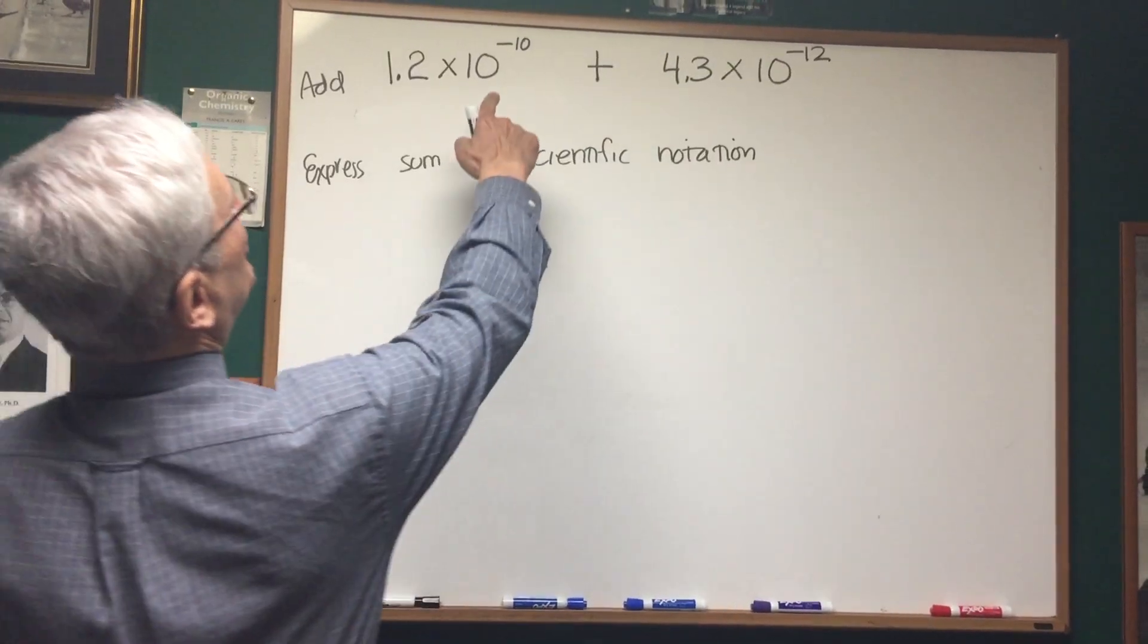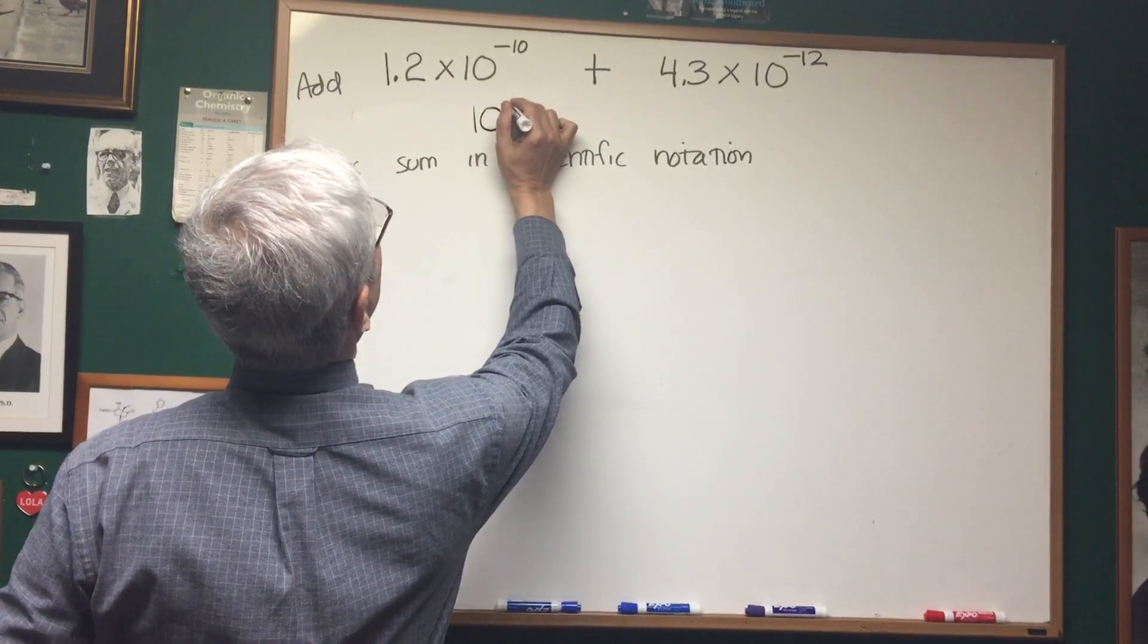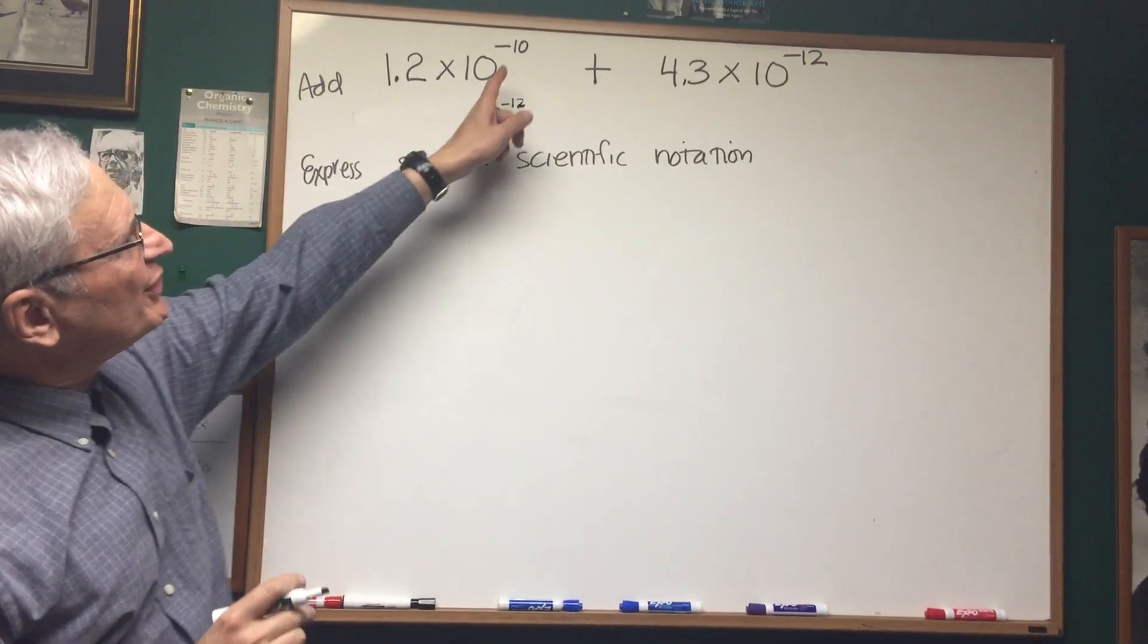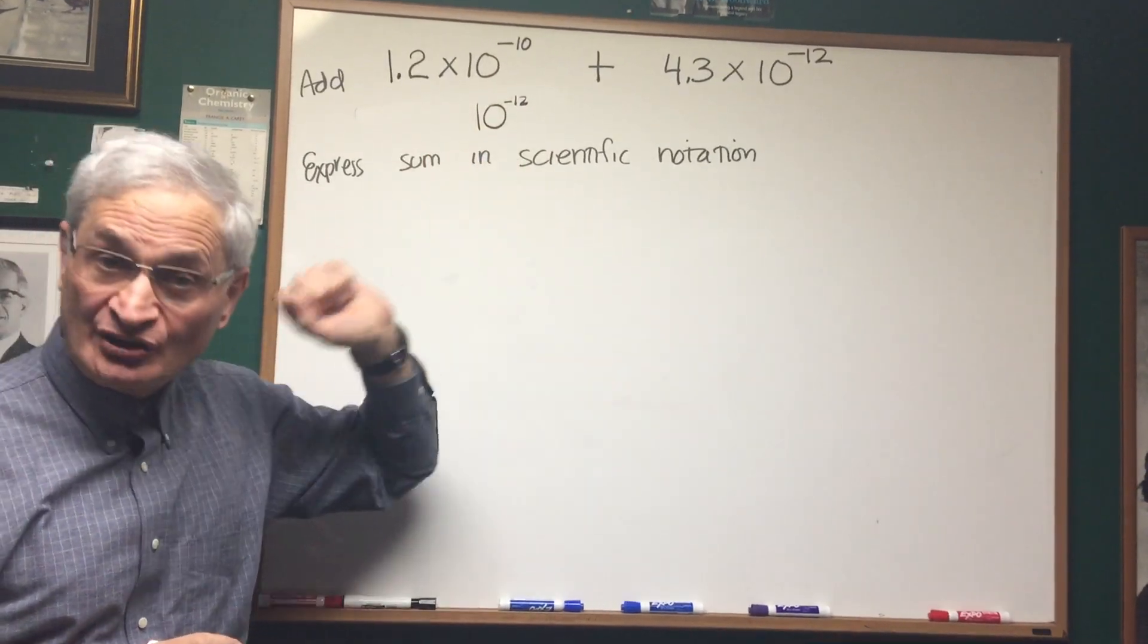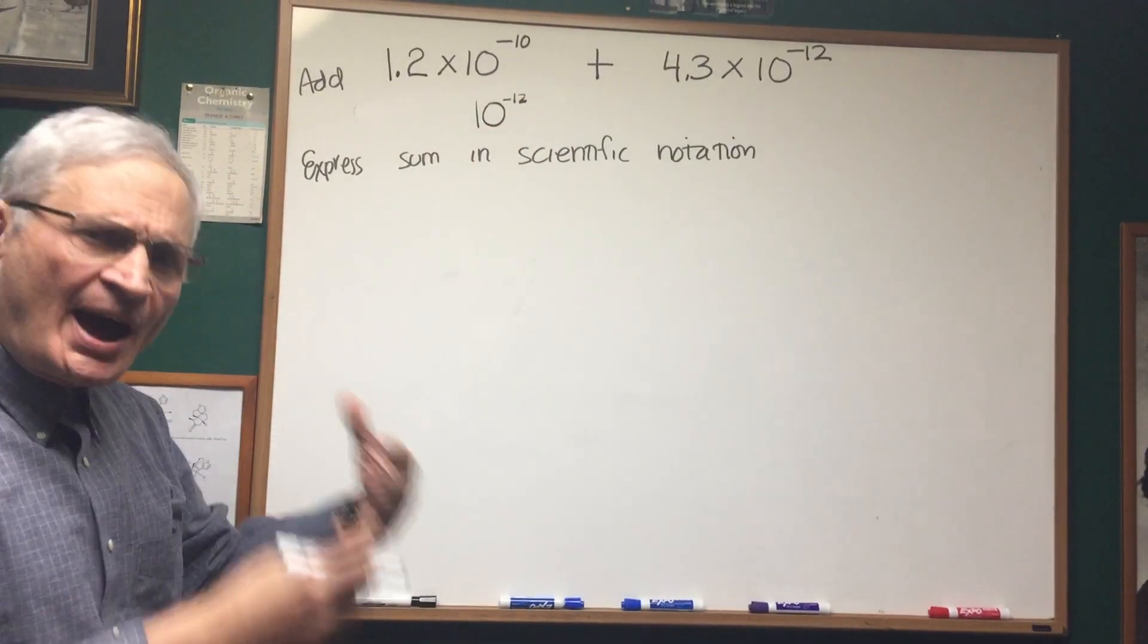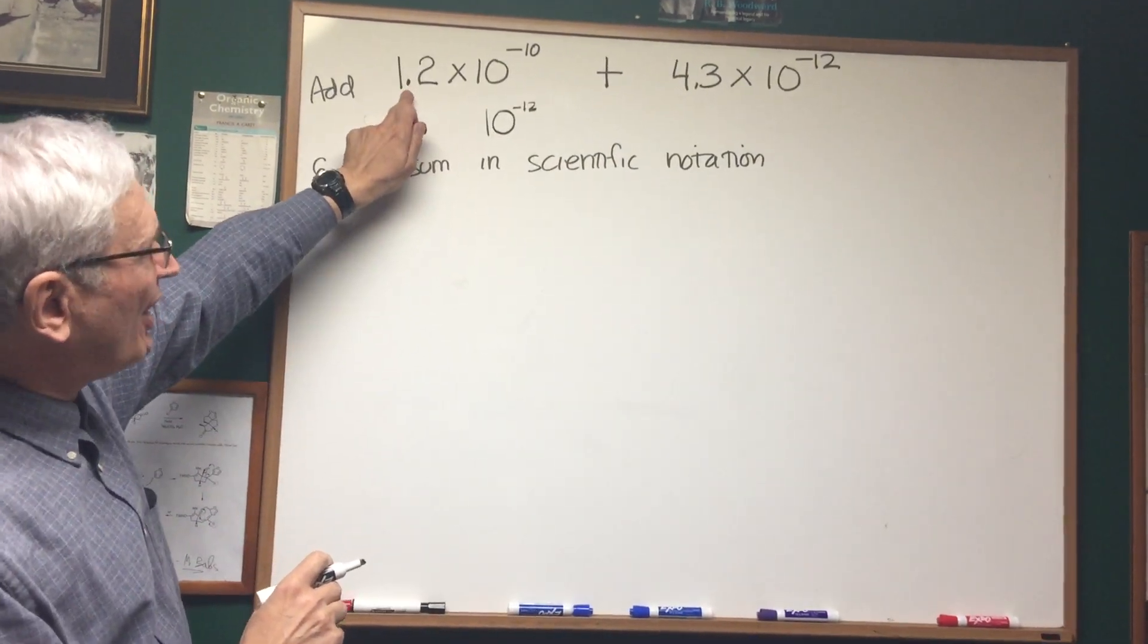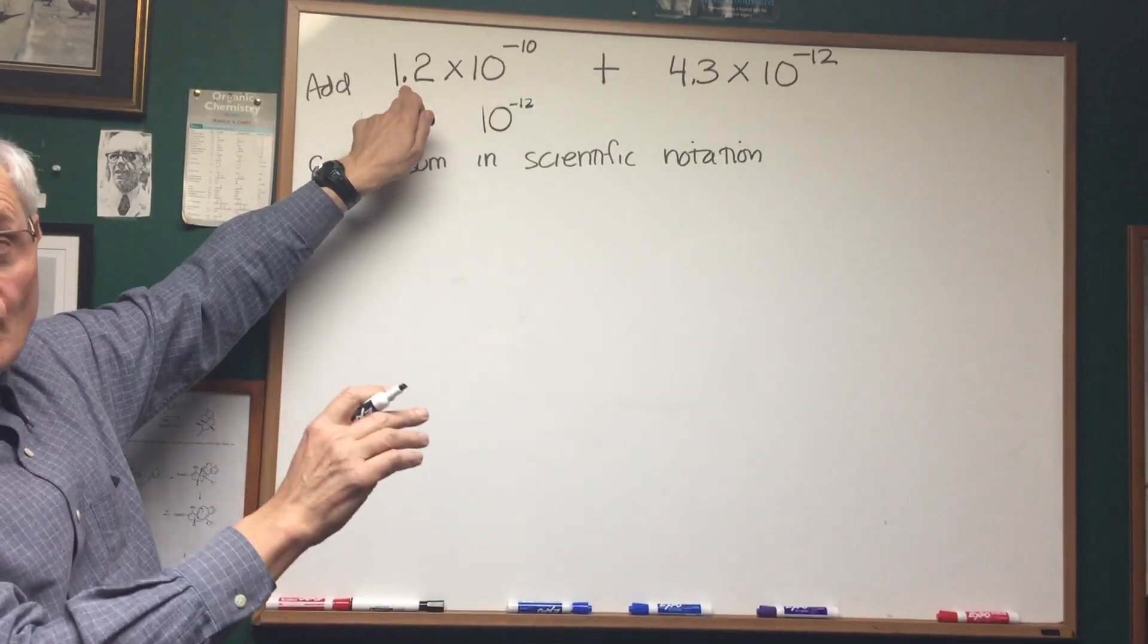So here's what we're going to do. We're going to change the second expression to 10 to the negative 12th. Now, what did we do to change 10 to the minus 10 to 10 to the minus 12th? We divide it by 100. That's a division by 100 by reducing the power of 10 by 2. In order to compensate for that and preserve the value, we're going to multiply the mantissa portion of the scientific notation by 100.